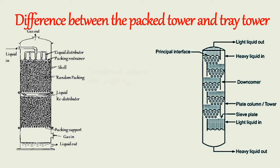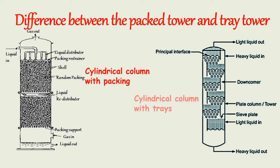A packed column is a cylindrical column that is filled with packing material, like Raschig rings, Pall rings, Berl saddles, and Intalox saddles. A tray tower is a cylindrical column that consists of various types of trays, like bubble cap plates, sieve plates, and valve plates.